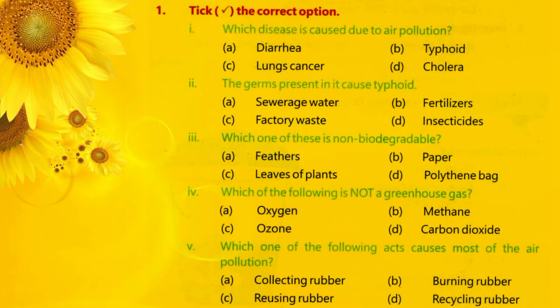Question 1 — Tick the correct option. Question: Which disease is caused due to air pollution? Options: A. Diarrhea, B. Typhoid, C. Lung cancer, D. Cholera. The correct option is C — Lung cancer.